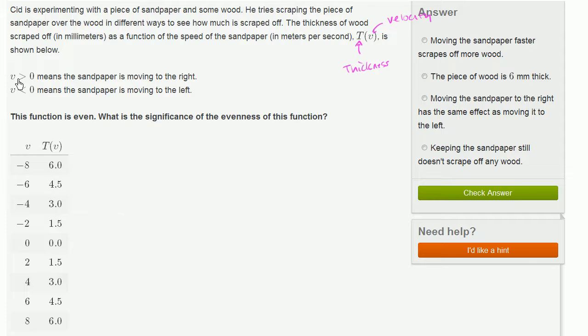And so if the velocity is greater than 0, that means that the sandpaper is moving to the right. That makes sense. That's the standard convention. And if the velocity is less than 0, it means the sandpaper is moving to the left.